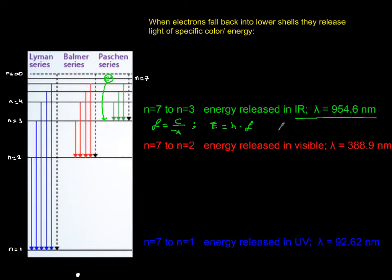If the same electron is sitting on shell number seven and comes to n equals two, it's going to give you a discrete color in the visible domain. The wavelength gets smaller than the one in infrared, the frequency goes higher, and energy goes higher.